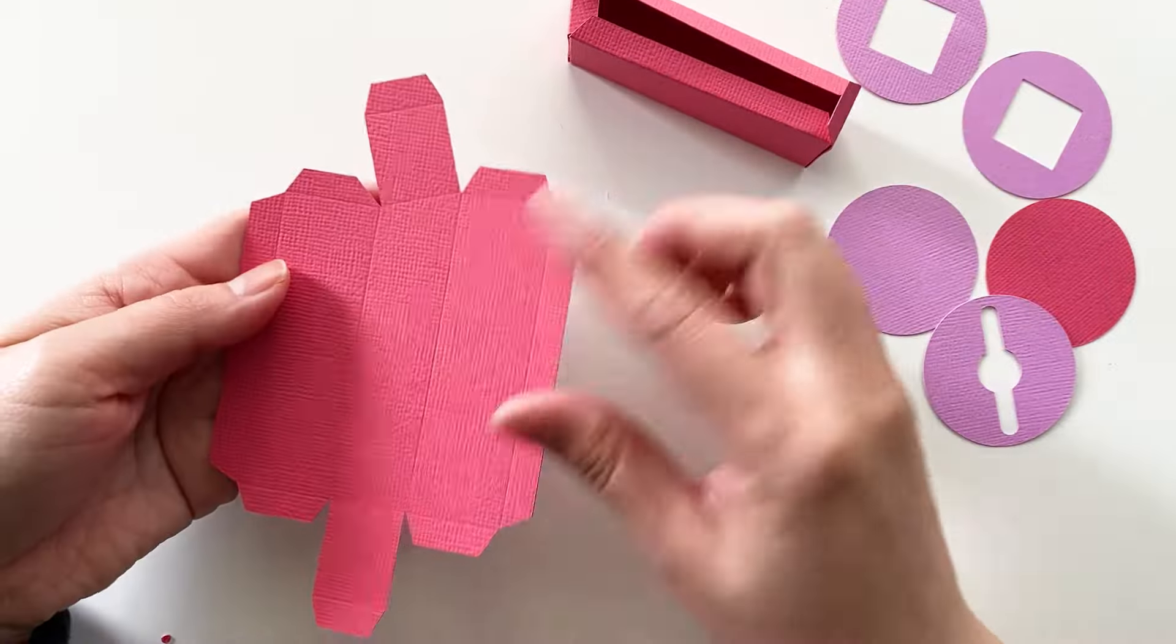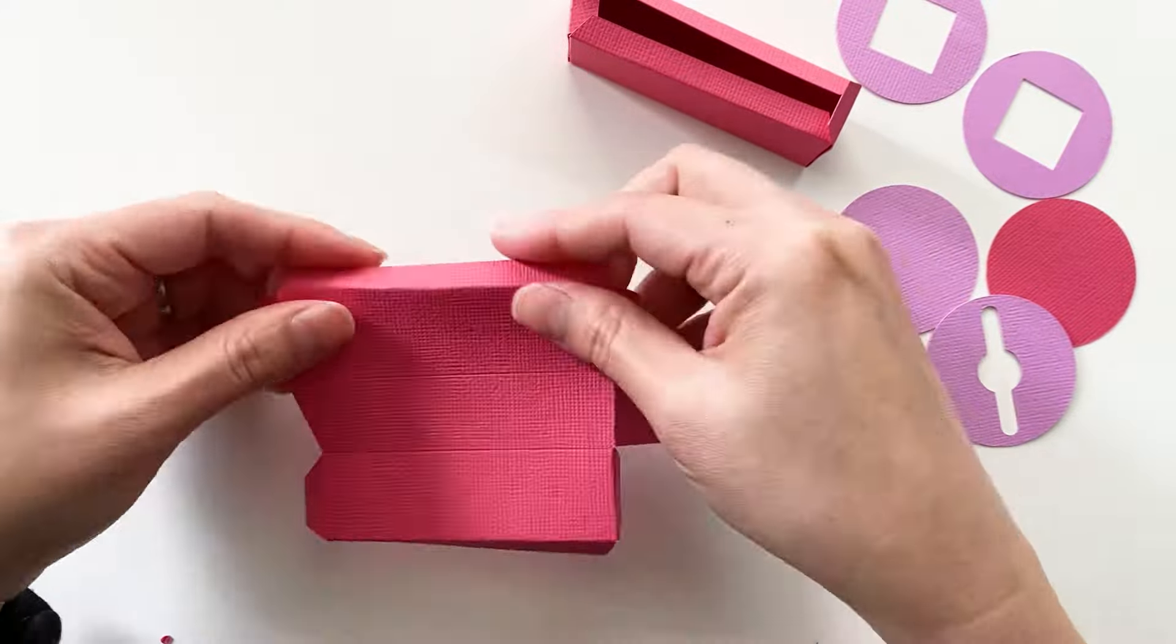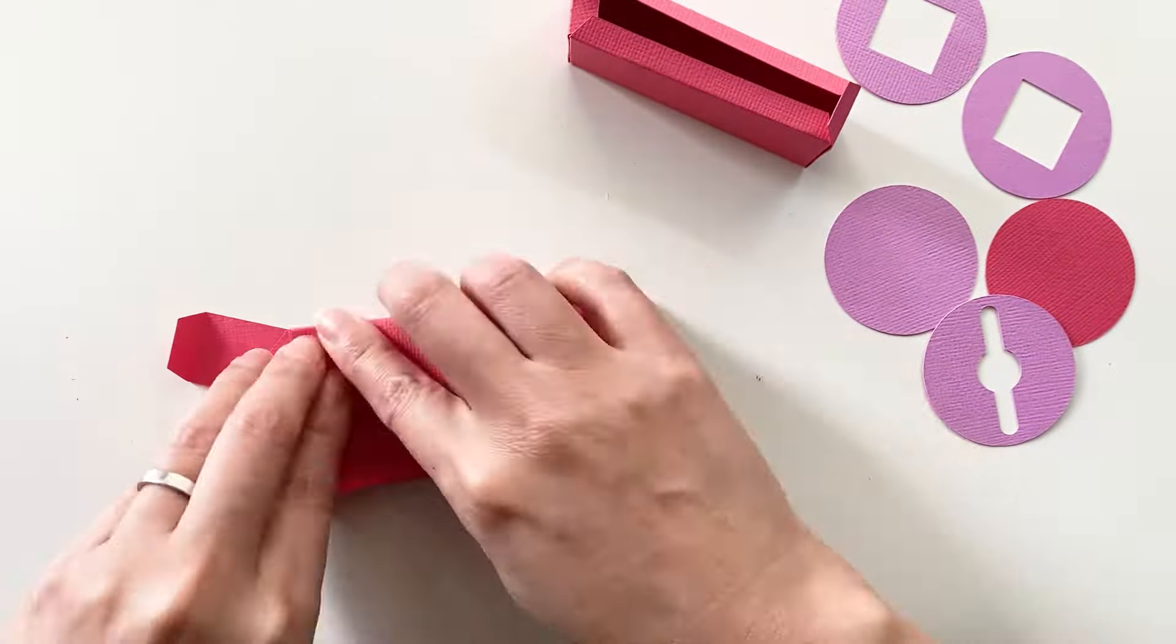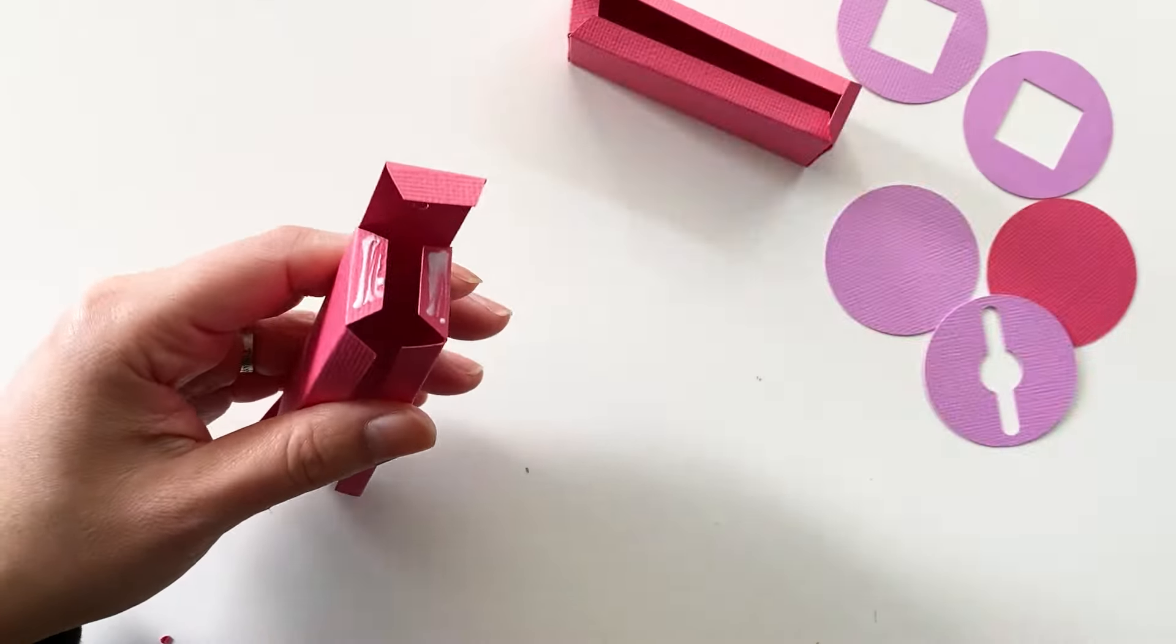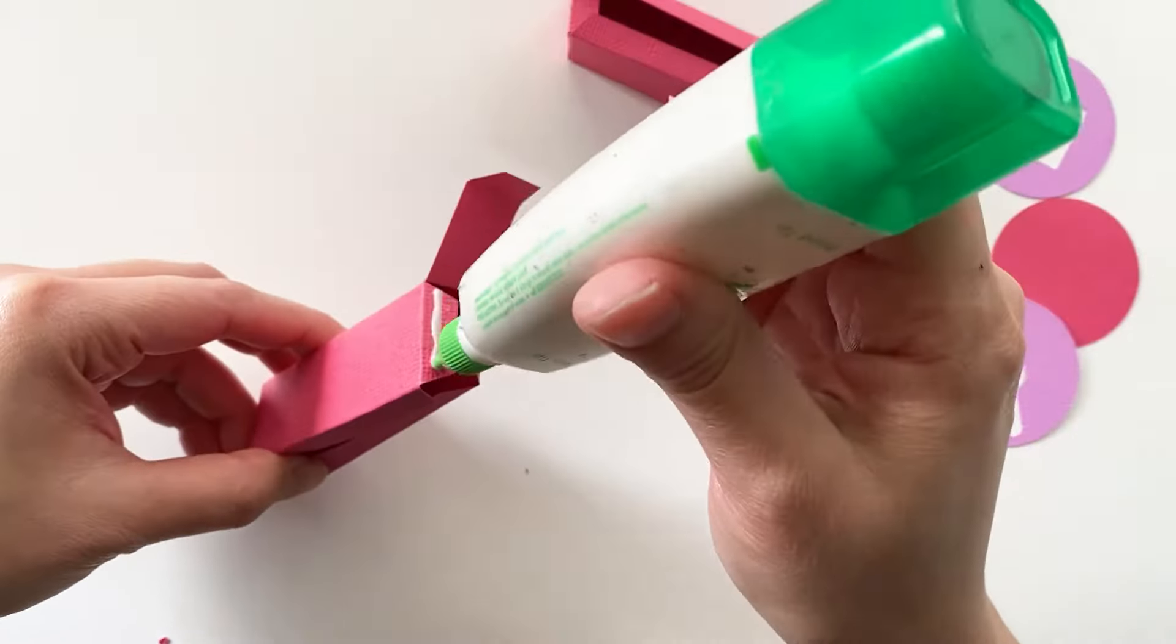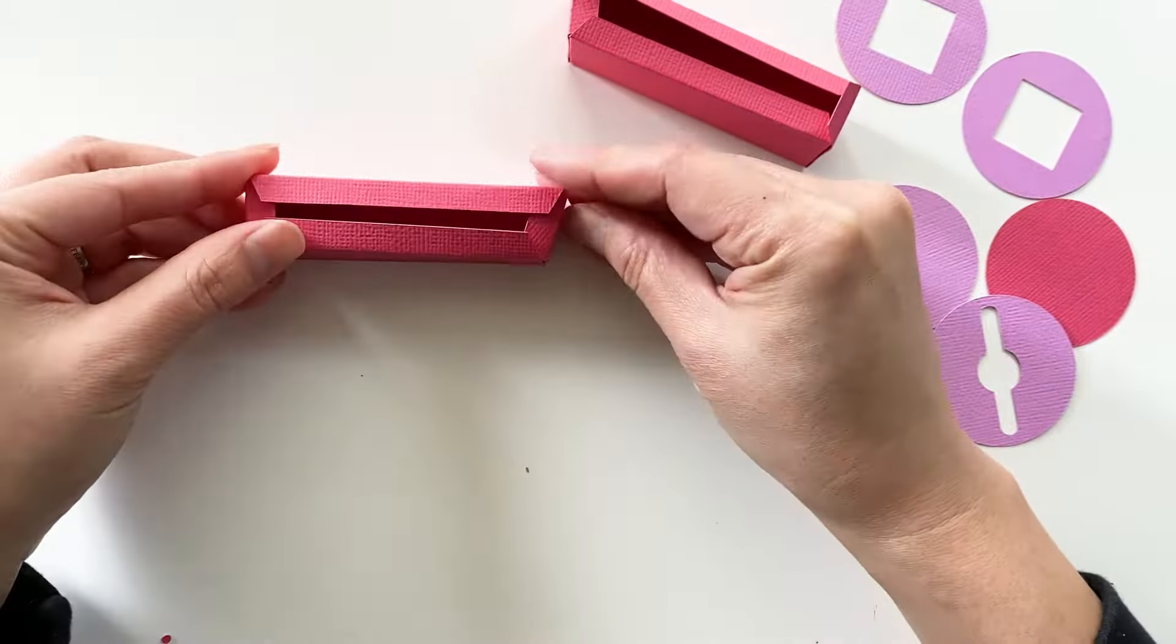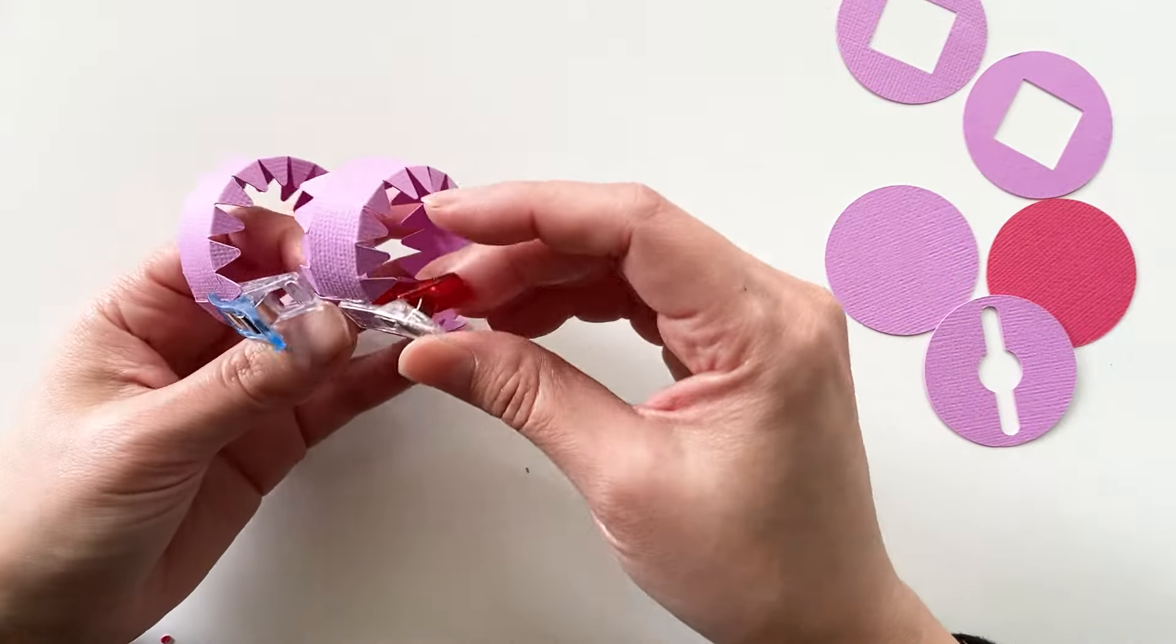Now we are doing this one. Same as this one. Fold all the folding lines and glue together. Make it into a rectangle box. Fold it together. Hold it together from the middle until the glue is dry. Put it aside.